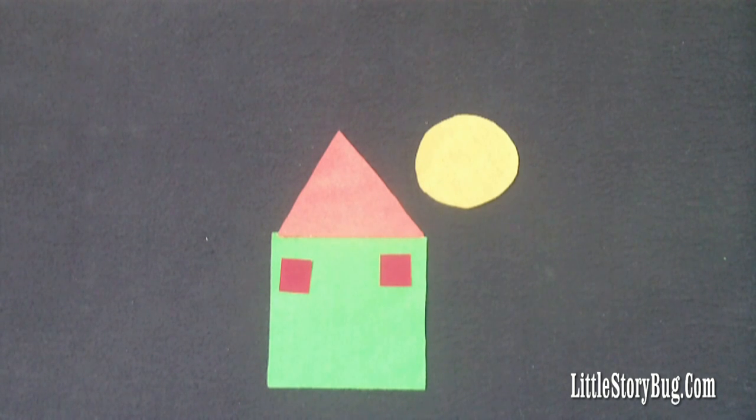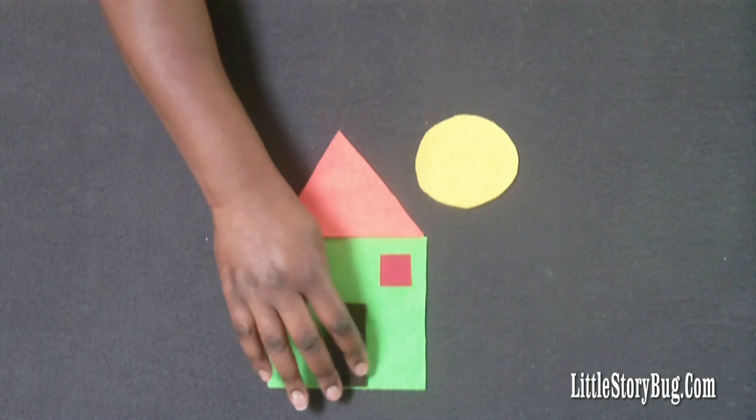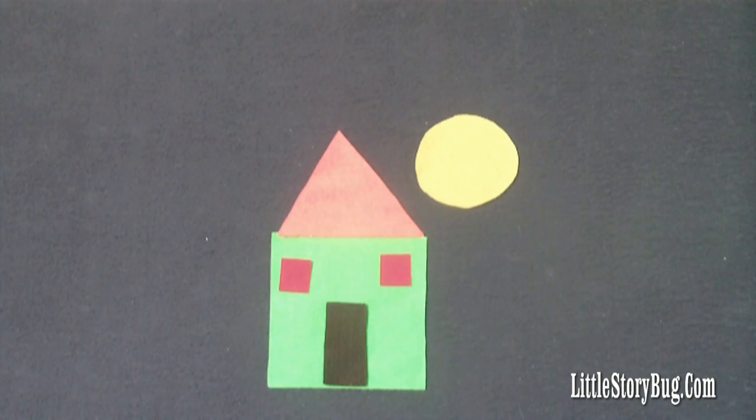but guess what happened, plop, a brown rectangle fell down and landed right on top of the green square. And they were so happy together,